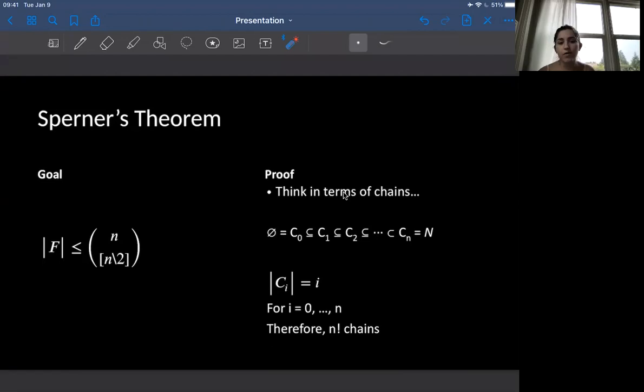So the empty set would be equal to C0, it's a subset of C1, it's a subset of C2, all the way up to n, where we know that Ci is going to be equal to i, which is going to be equal to 0, 1, 2, 3, all the way up to n.